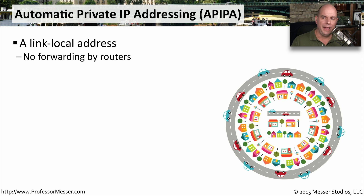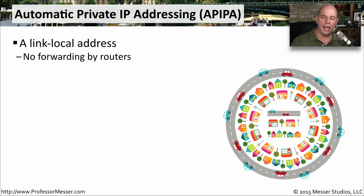This middle ground is called an Automatic Private IP Address, or APIPA. This is what we call a link-local address, meaning it allows you to communicate with anybody on the same subnet who has also been given an APIPA address. But it doesn't allow you to route outside of that subnet — so if you were assigned an APIPA address, you would not be able to communicate out to the internet, for example.